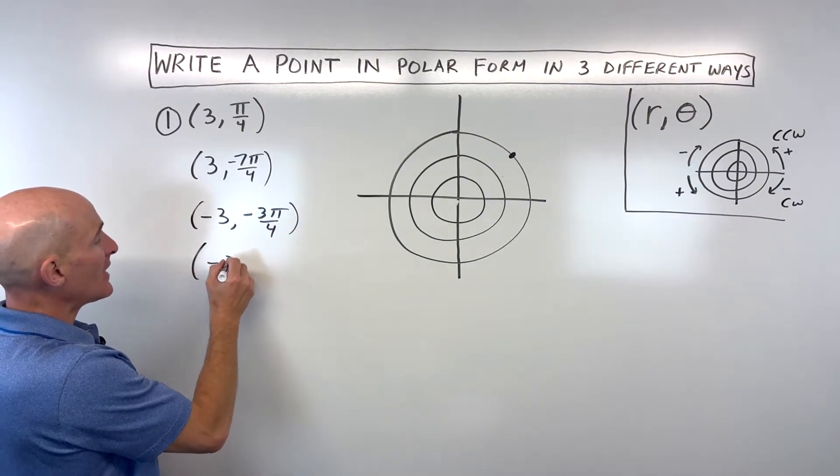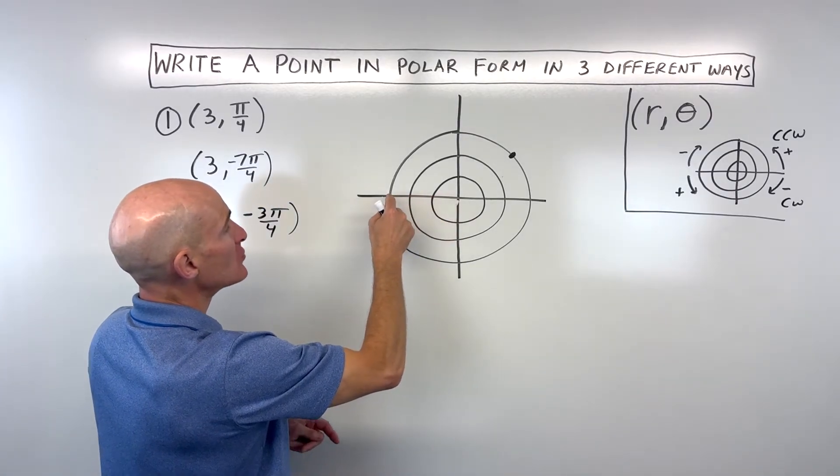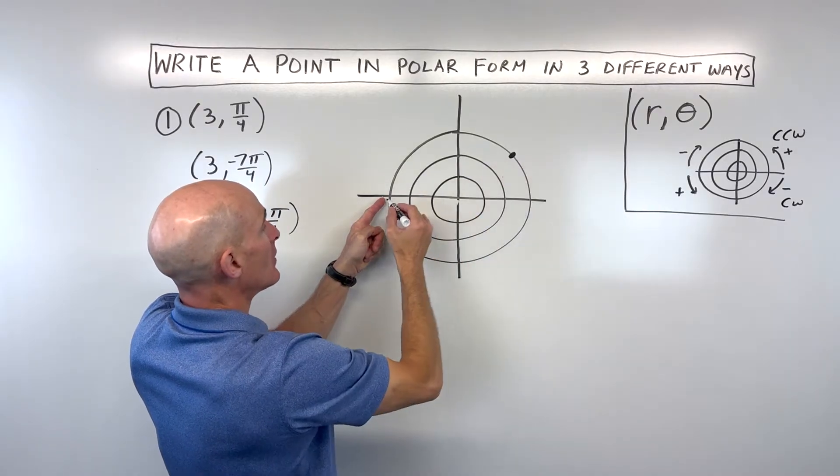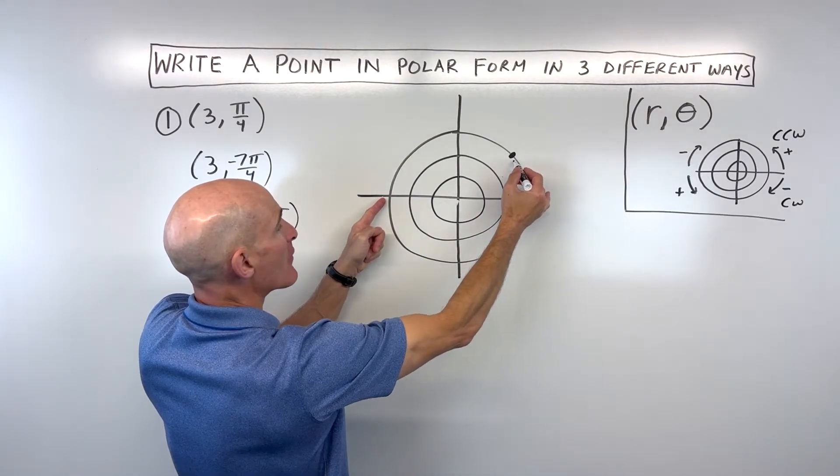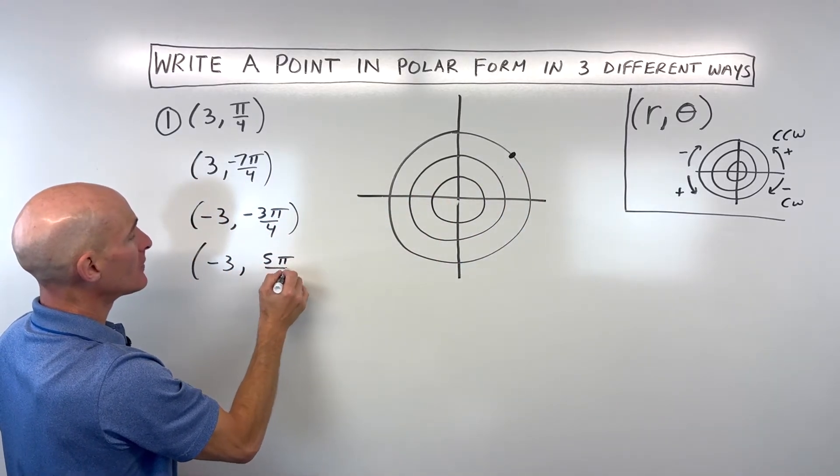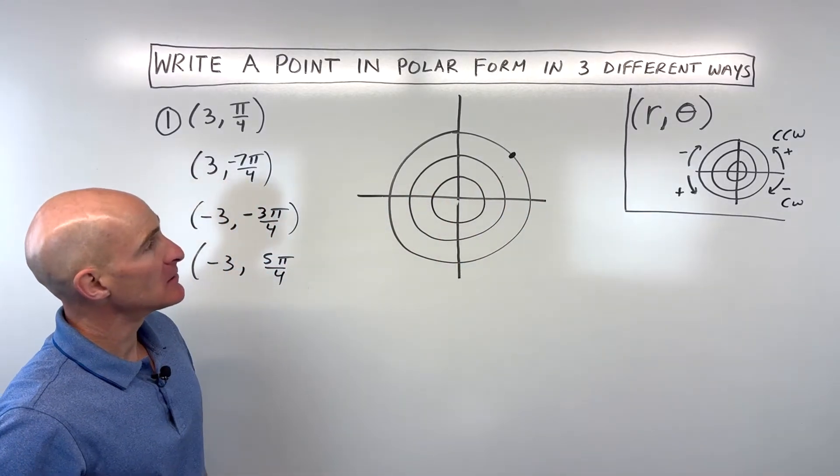Or we could do negative three, so one, two, three, and rotate counterclockwise. This would be one pi plus another pi over four, so that's five pi over four.